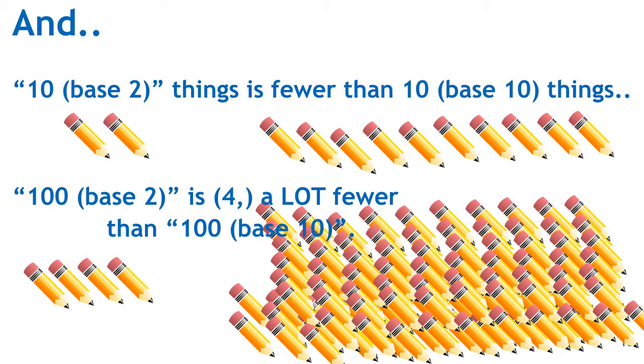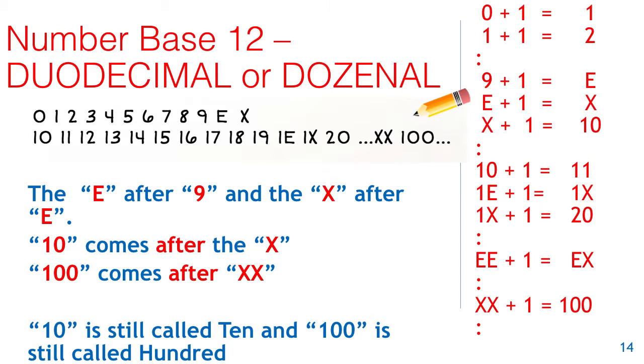Now we're going to move from this binary or base two system to number base twelve, the other set of numbers that we wrote originally. And that is known as the duodecimal, or the dozenal, number system. And you can see in the sequence of numbers that e comes after nine, and x comes after e, and 10, or two digits, doesn't come till after the x. And similarly, 100 comes after hex x.